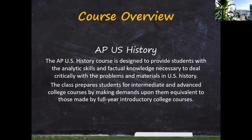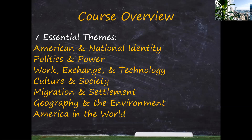The AP U.S. History course is designed to provide students with the analytical skills and factual knowledge necessary to deal critically with the problems of U.S. history, and to prepare students for intermediate and advanced college courses. It's not only impressive to have on your transcripts — it's also a way to get college credit if you pass the AP exam. There are seven essential themes we cover: American and National Identity, Politics and Power, Work Exchange and Technology, Culture and Society, Migration and Settlement, Geography and Environment, and America in a New World. These themes are interwoven from one unit to another and form the basis for many written response questions on the AP exam.